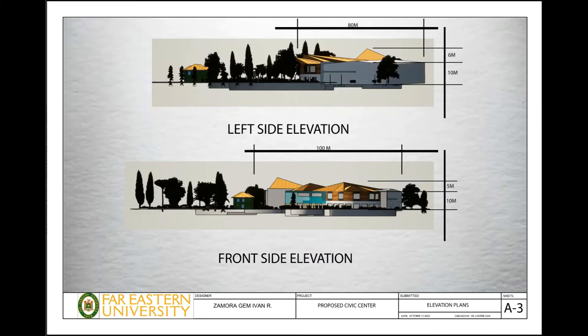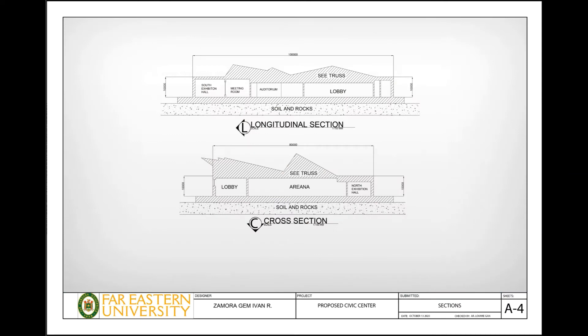For the elevation and section — on the left side elevation, the height from the floor to seating is 10 meters, the seating to the roof is about 6 meters, and the width is 80 meters. The front-side elevation is wider at about 100 meters. In the section, you can see the lobby and the arena with labels already placed, making it easier to understand when viewing the floor plan alongside the section.